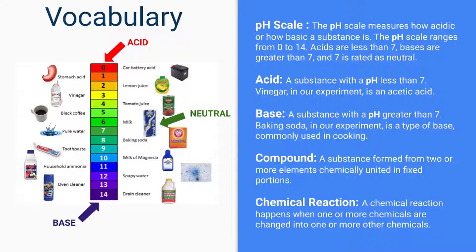The pH scale measures how acidic or how basic a substance is. It ranges from zero all the way to 14. Acids are categorized as less than seven, bases are greater than seven, and seven itself is rated as the neutral number.